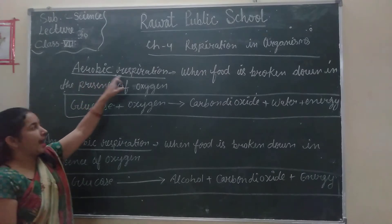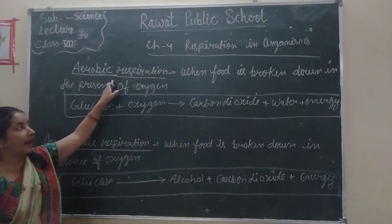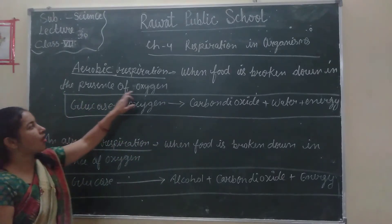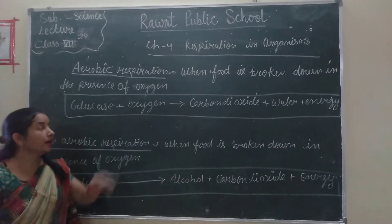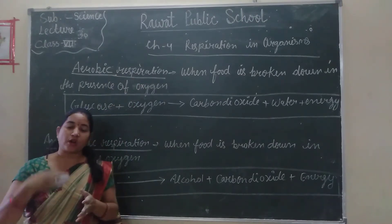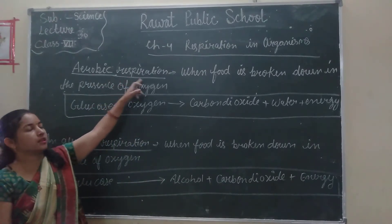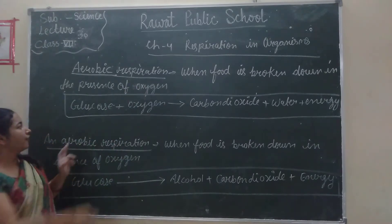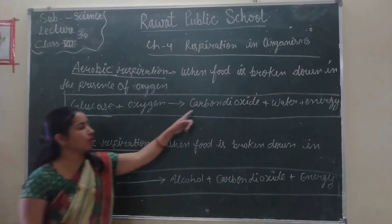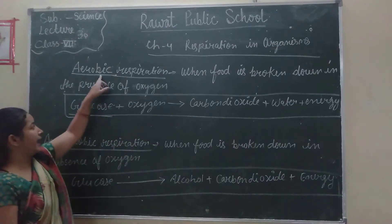The first type of respiration is aerobic respiration. What is the meaning of aerobic respiration? When food is broken down in the presence of oxygen, it is called aerobic respiration. When food is broken down in the presence of oxygen, it is divided into carbon dioxide and water is released, and energy is also released.